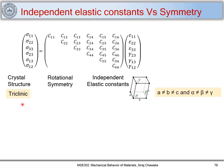Let us consider a triclinic structure, defined as a ≠ b ≠ c and α ≠ β ≠ γ. The triclinic structure has the lowest symmetry — in fact, it has no symmetry. Therefore we need all 21 independent elastic constants, because there is no symmetry to reduce the number. We need all 21 elastic constants to correlate the stress components to strain components for a triclinic structure.